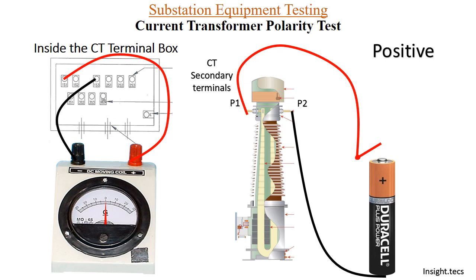If the CT polarity is negative, the deflection will occur on the opposite side. So whenever the connection is made, the deflection will be on the negative side of the galvanometer, meaning the CT polarity is negative. This is demonstrated here where the deflection is seen on the negative side.